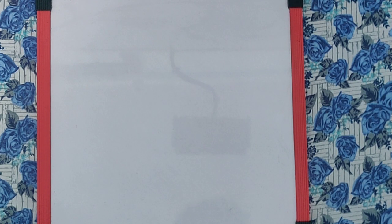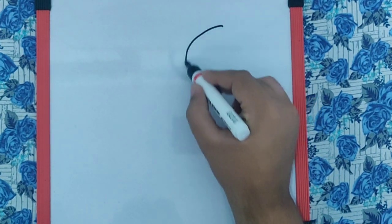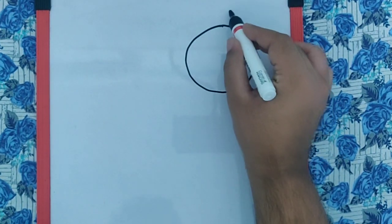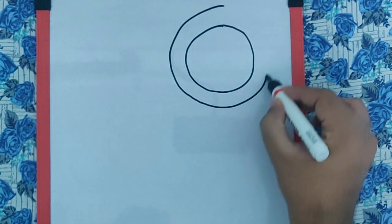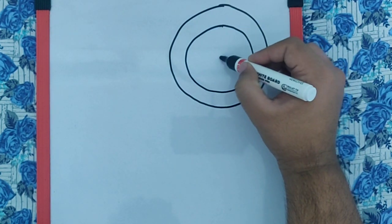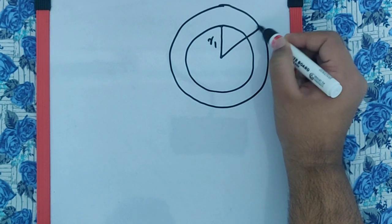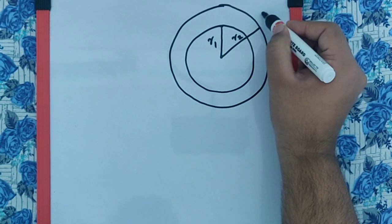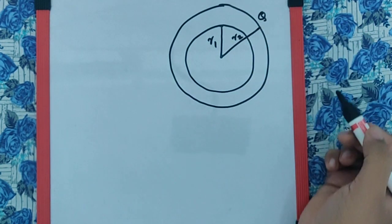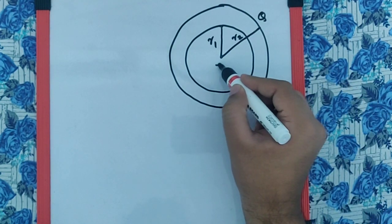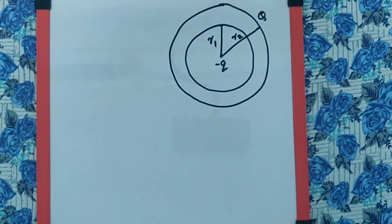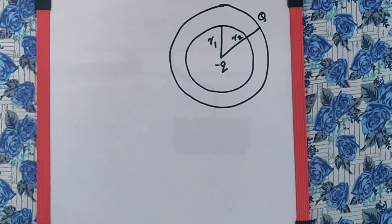The surface charge density on the inner and outer surface of the shell will be? Now, we can assume this to be the spherical shell where the inner radius is R1 and the outer radius is R2, and it has a charge capital Q on the outer surface and a small negative q is placed at the center of the shell.